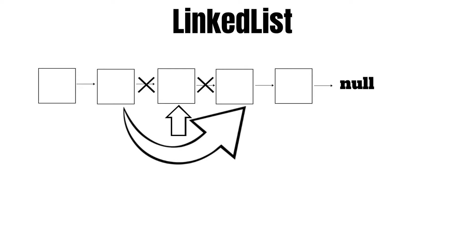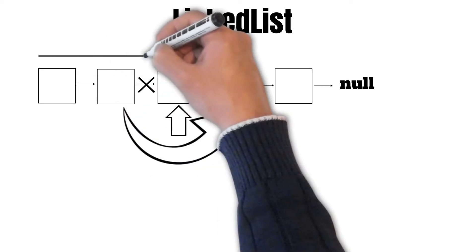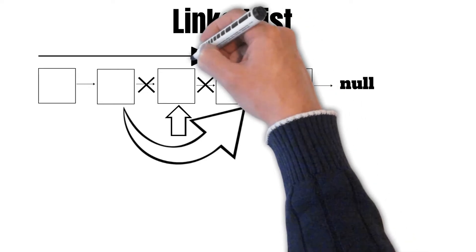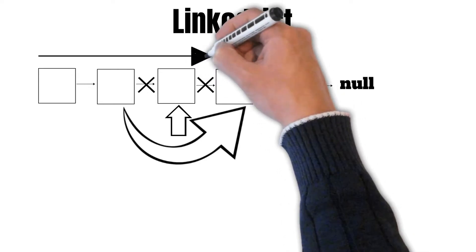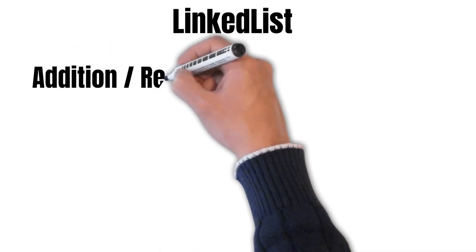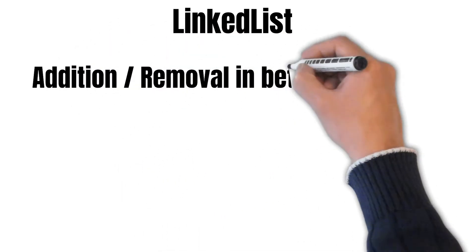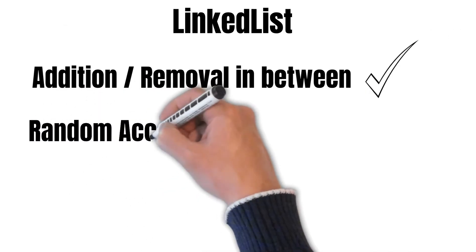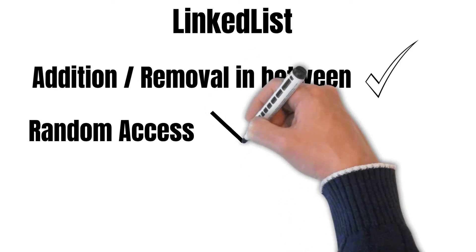On the other hand, if we want to access a particular element in a LinkedList — say the fourth element — there is no other way apart from traversing the list one by one from the 0th, first, second, third index. This is the only way to access elements in a LinkedList. Therefore, LinkedList is the data structure of choice for addition and removal in between, but it is not suitable for faster random access compared to an ArrayList.